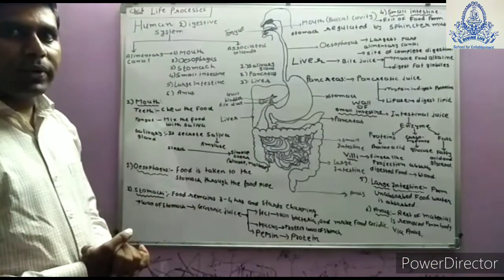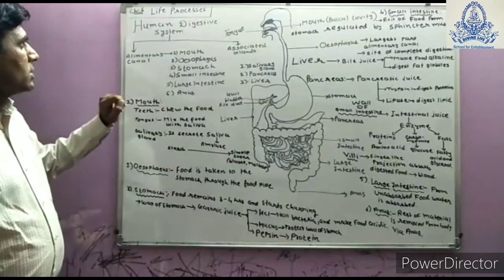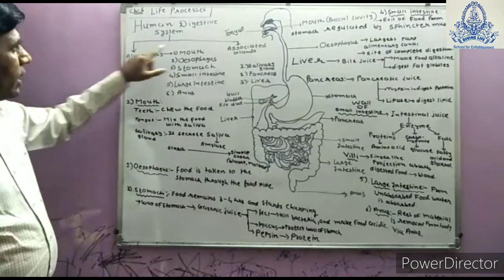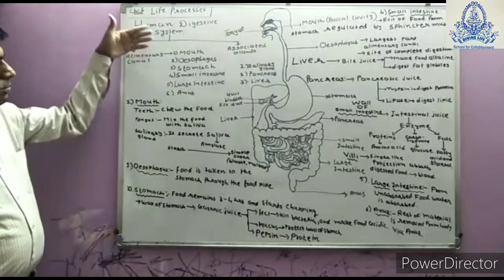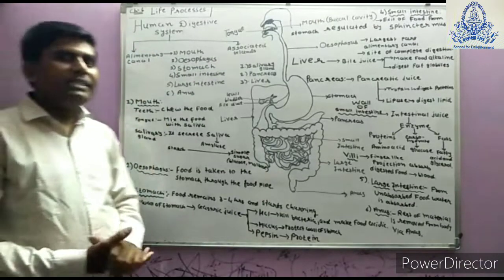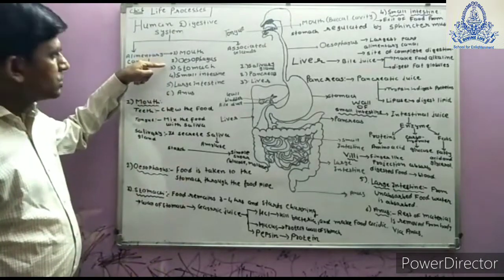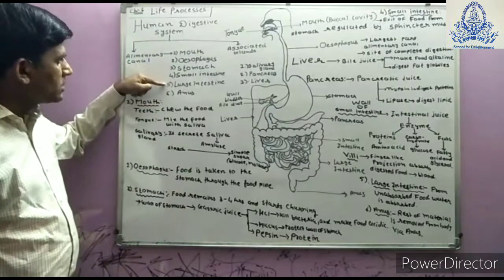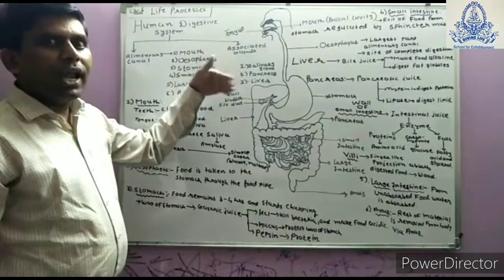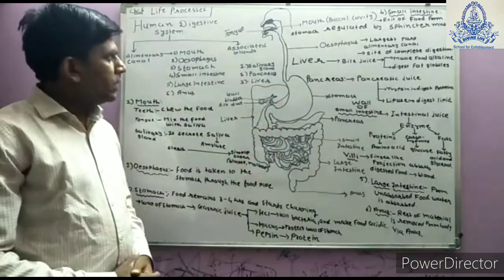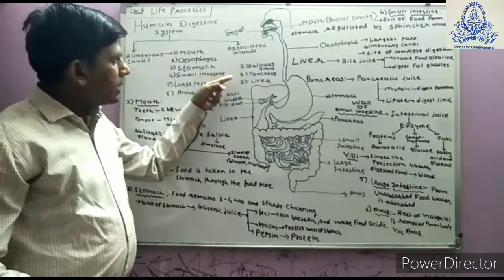The human digestive system consists of the alimentary canal and associated glands. The alimentary canal consists of some organs which are called digestive organs. The first one is the mouth, followed by the esophagus, stomach, small intestine, large intestine, and anus. The three associated glands which help in digestion of food are the salivary glands, pancreas, and liver.